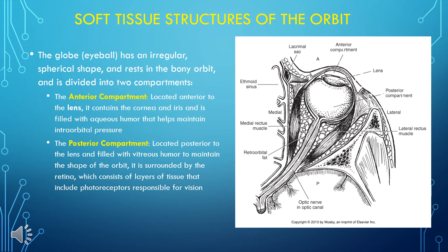The globe (eyeball) has an irregular spherical shape and rests in the bony orbit, divided into two compartments. The anterior compartment, located anterior to the lens, contains the cornea and iris and is filled with aqueous humor that helps maintain intraorbital pressure. The posterior compartment, located posterior to the lens, is filled with vitreous humor to maintain the shape of the orbit and is surrounded by the retina, which consists of layers of tissue including photoreceptors responsible for vision.